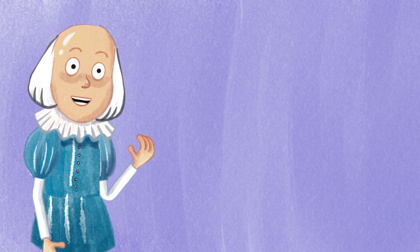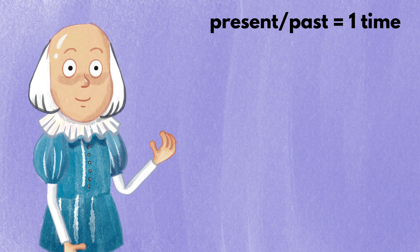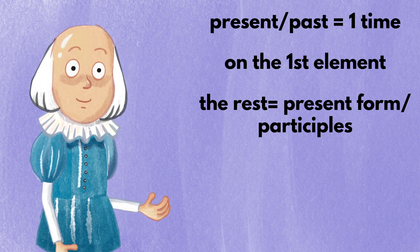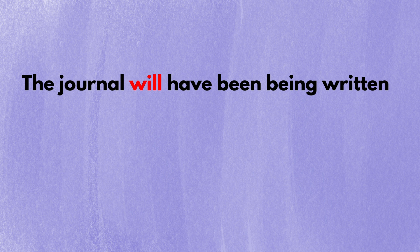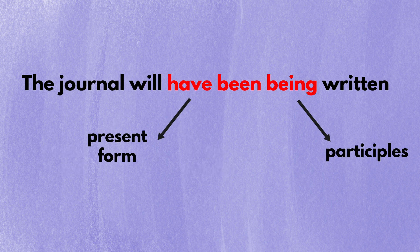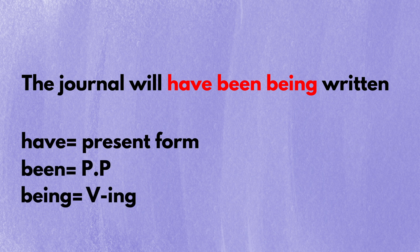Now we're at the last part of this chapter, and this part is very important. You only mark the present or past form one time for an entire predicate verb, and you mark it on the first element of the predicate verb. The rest of the elements are in either the present form or participle forms. Take the example phrase the journal will have been being written. The first element is will, so you have the option to put either the present form will or the past form would. If you put anything other than will in the past form elsewhere, it'll be wrong — for instance, the journal will had been being written is incorrect.